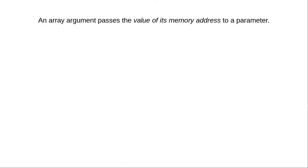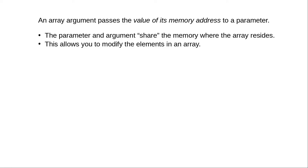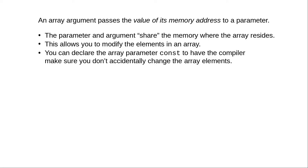In summary, an array argument passes the value of its memory address to a parameter. That means that the parameter and argument share the memory where the array resides. This allows you to modify the elements in an array, but you can declare an array parameter to be a constant to have the compiler make sure that you don't accidentally change the array elements.